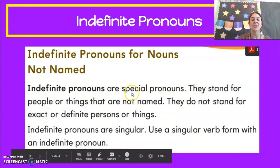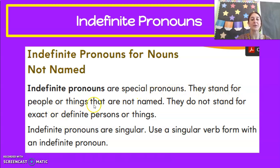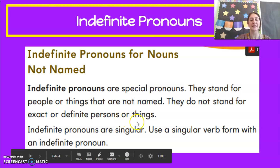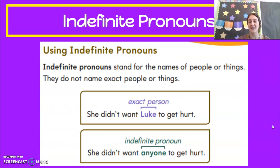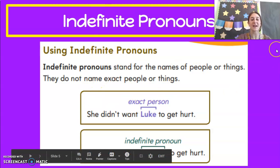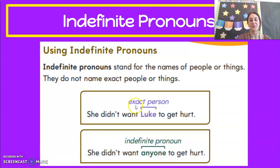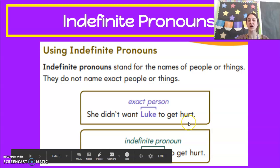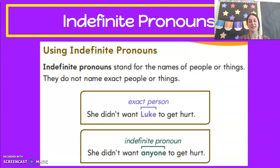Indefinite pronouns are special pronouns. They stand for people or things that are not named. They do not stand for exact or definite persons or things. Indefinite pronouns are singular, so we use a singular verb form with an indefinite pronoun — our verb is going to have a singular S on the end. We don't use indefinite pronouns for the names of specific people or things. For example, instead of saying she didn't want Luke to get hurt — which is talking about exactly Luke — we say she didn't want anyone to get hurt, meaning anyone in the whole class.